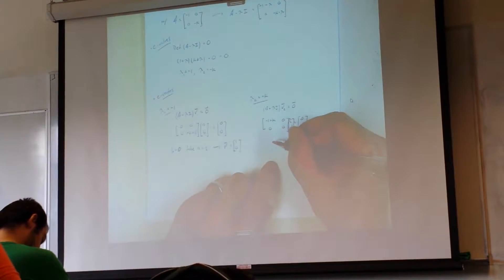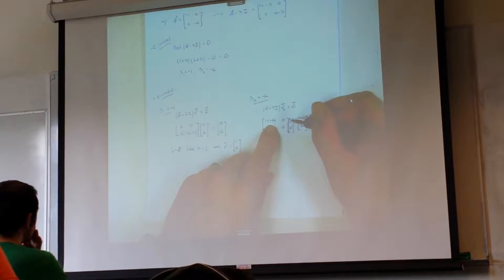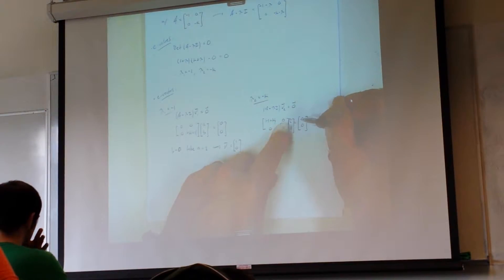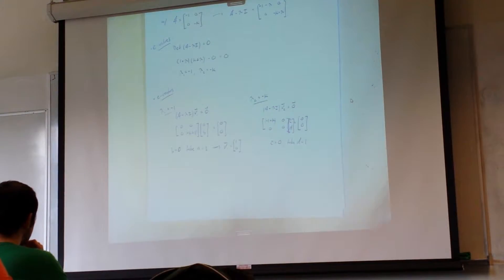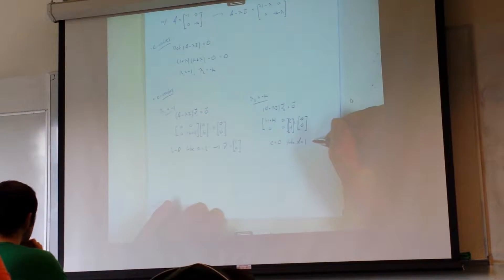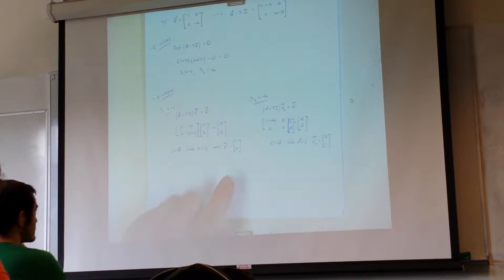So again, with variables C and D, if you multiply this out, negative one plus K times C plus zero D has to equal zero, so C has to be zero, and we can take D to be anything — so D could be one. We would get C is zero, D is one — the vector [0, 1], which is the J vector.